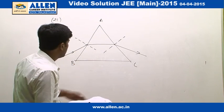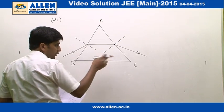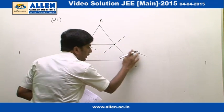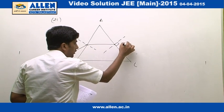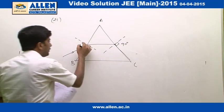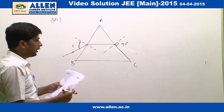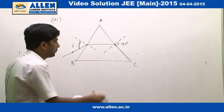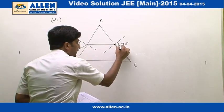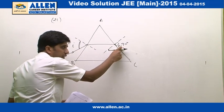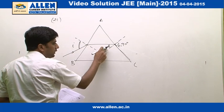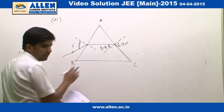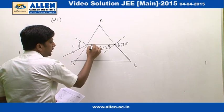First of all we assume that the angle of emergence is 90 degrees and then we calculate the angle of incidence for angle of emergence 90 degrees. As we know that if angle of emergence is 90 degrees, that means angle of incidence must be equal to critical angle, that is theta c, and this is angle of refraction at first face.